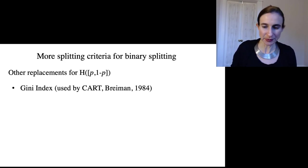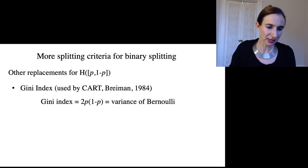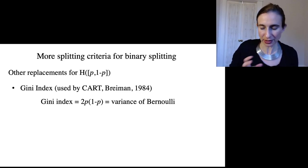Another replacement for entropy is something called the Gini index. The Gini index, instead of the entropy, you would calculate 2 times p times 1 minus p, which is the same as the variance of the Bernoulli distribution.